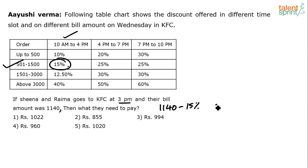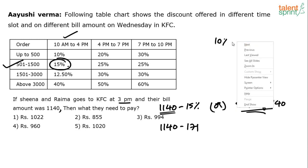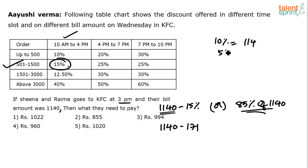So we calculate ₹1140 minus 15% of ₹1140. Finding 15% of 1140: 10% is 114, 5% is half of that which is 57, so 15% is 114 + 57 = 171. Therefore 1140 − 171 = 969. That's like 1000 − 31 = 969.